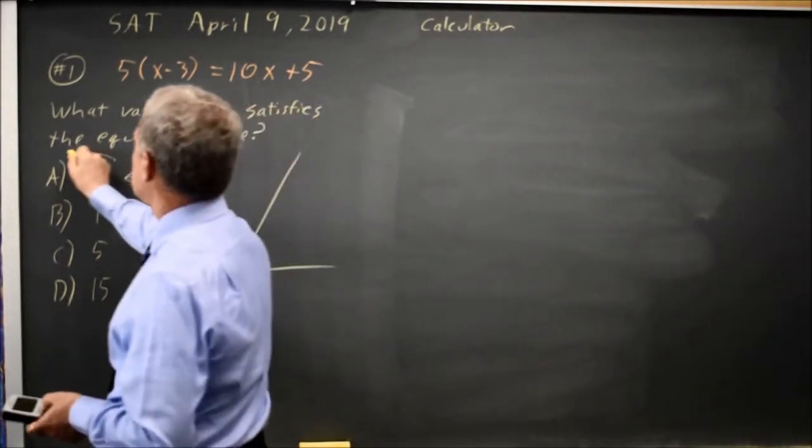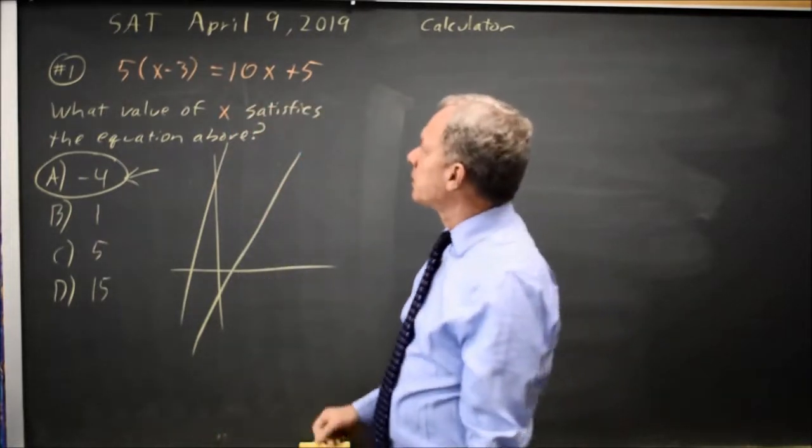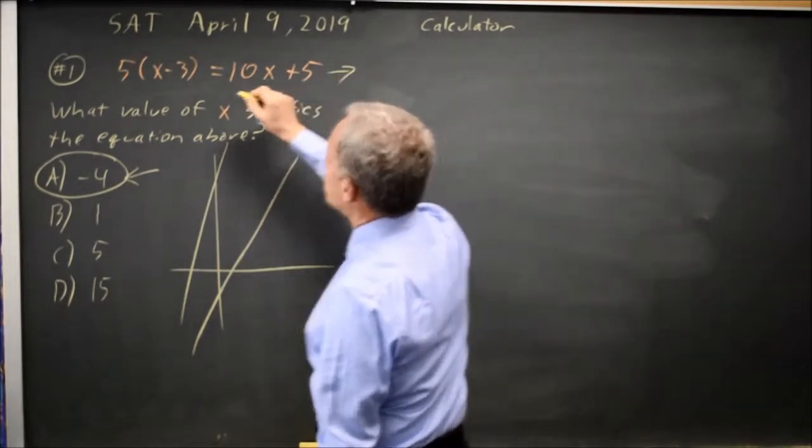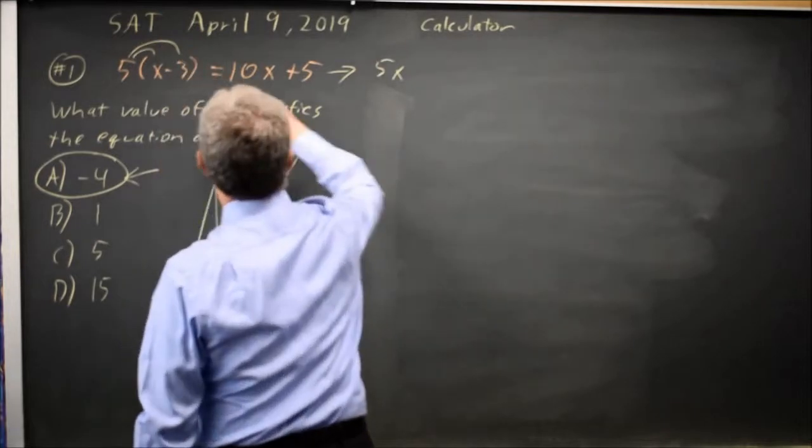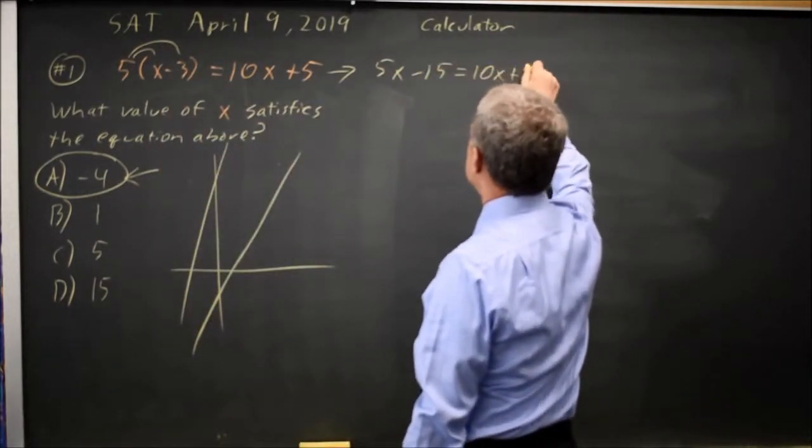And so choice A would be the correct answer. If I wish to do that algebraically, it can also be done by hand. Distribute the five. Five times X is five X. Five times negative three is negative fifteen, equals ten X plus five.